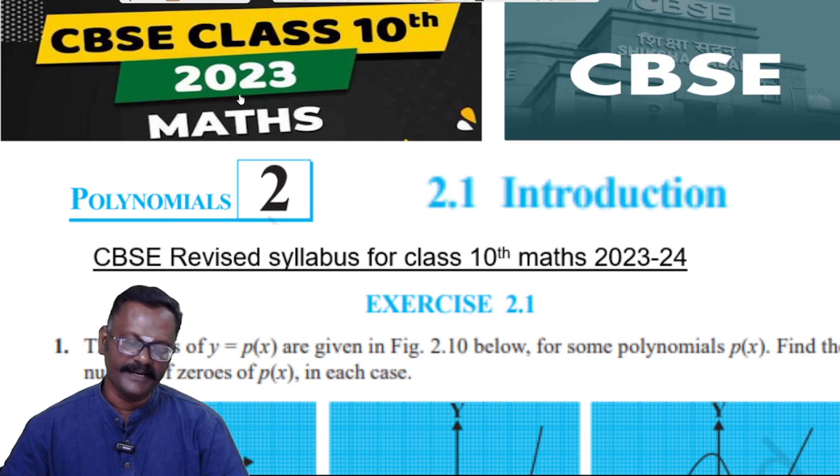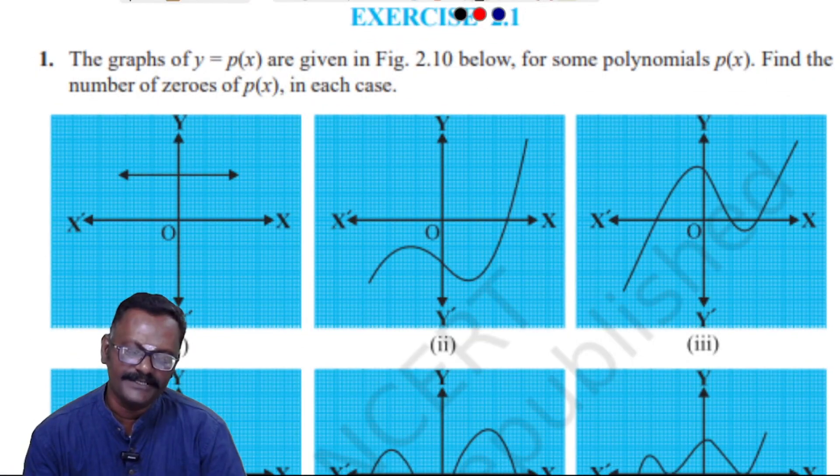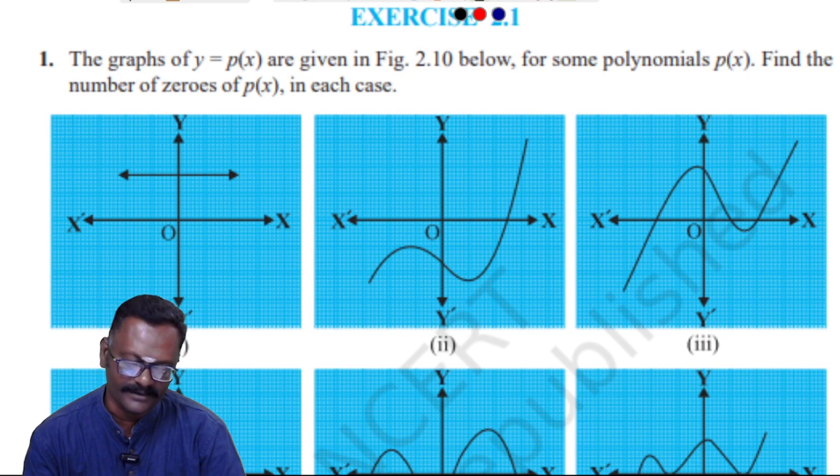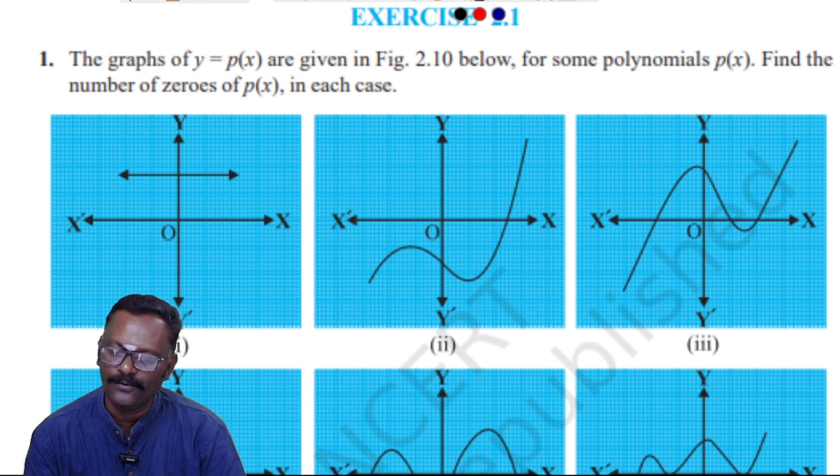Hi students, welcome to my channel Study Care. Now we are going to see CBSE Class 10 Maths Chapter 2, Exercise 2.1. First sub: The graph of y equals p of x are given in the figure. Graphs for some polynomials with the equations. Find the number of zeros of p of x in each case.